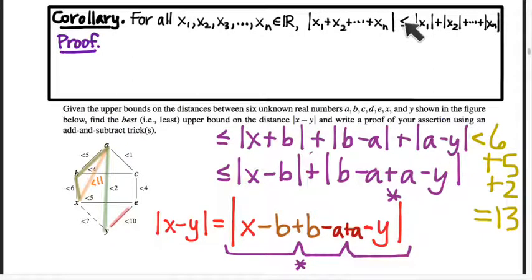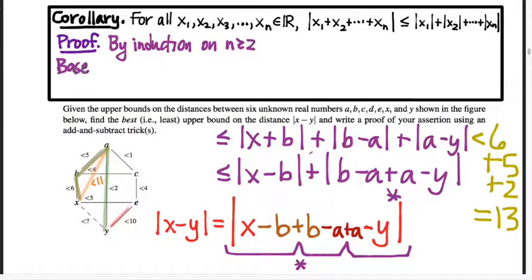That any finite number n of summands that I have inside the absolute value, the absolute value of that sum is always less than or equal to the sum of the absolute values. And the proof here is by induction. By induction on n. Starting from n equals 2. So in the base case, that's just the triangle inequality. Absolute value of x1 plus x2 is less than or equal to the absolute value of x1 plus absolute value of x2. That is the triangle inequality. So that we can assume to be true. This is a corollary of the triangle inequality.